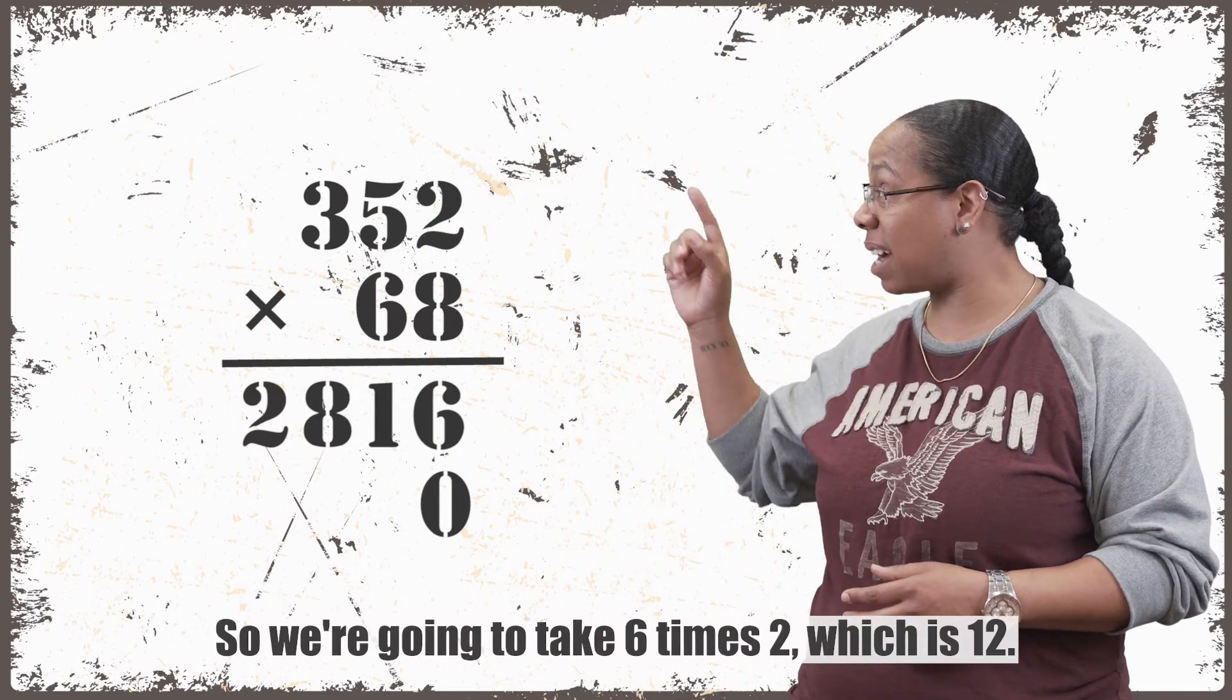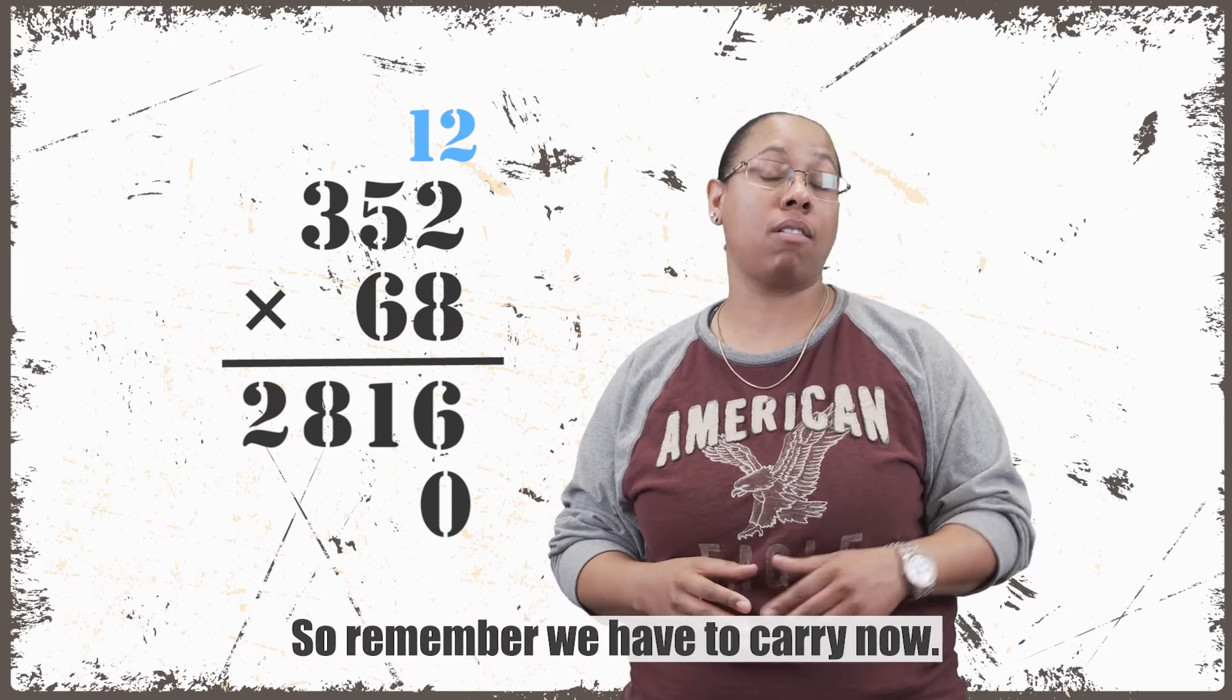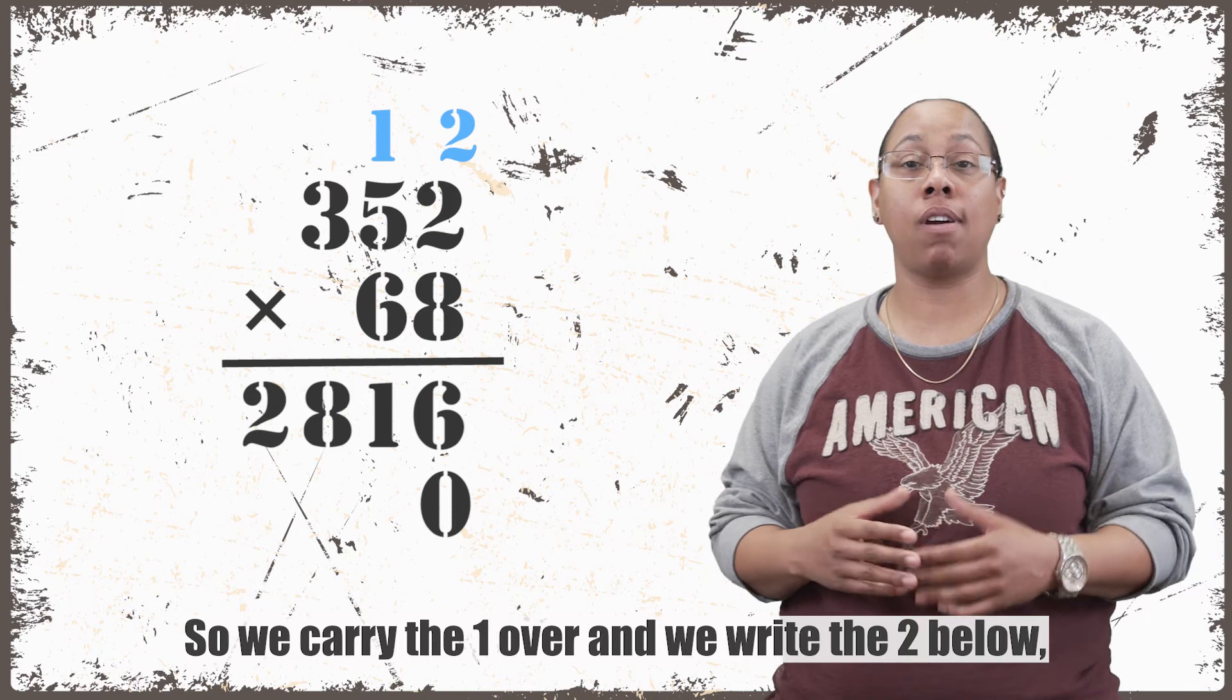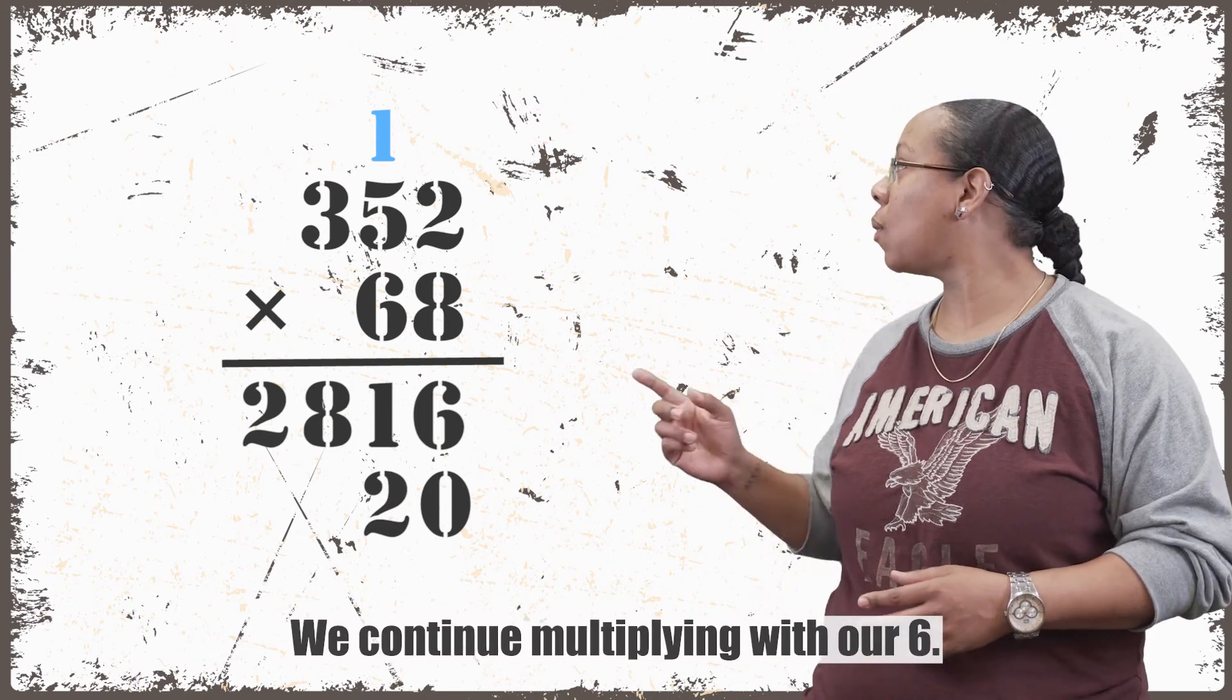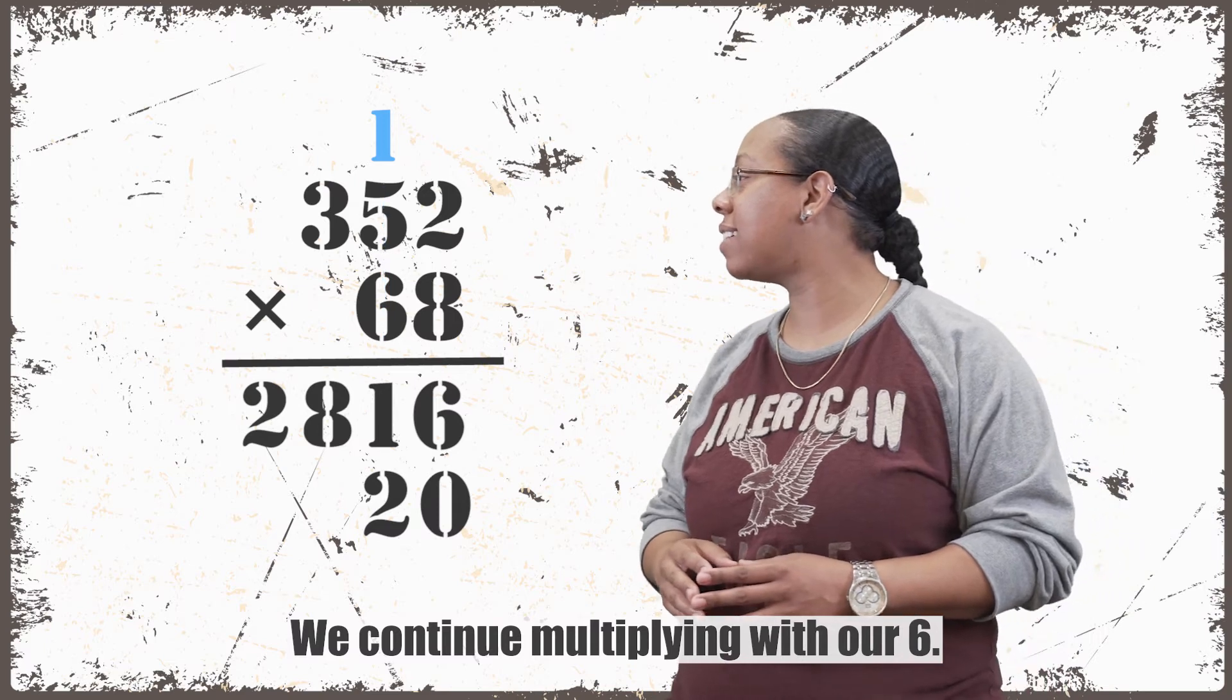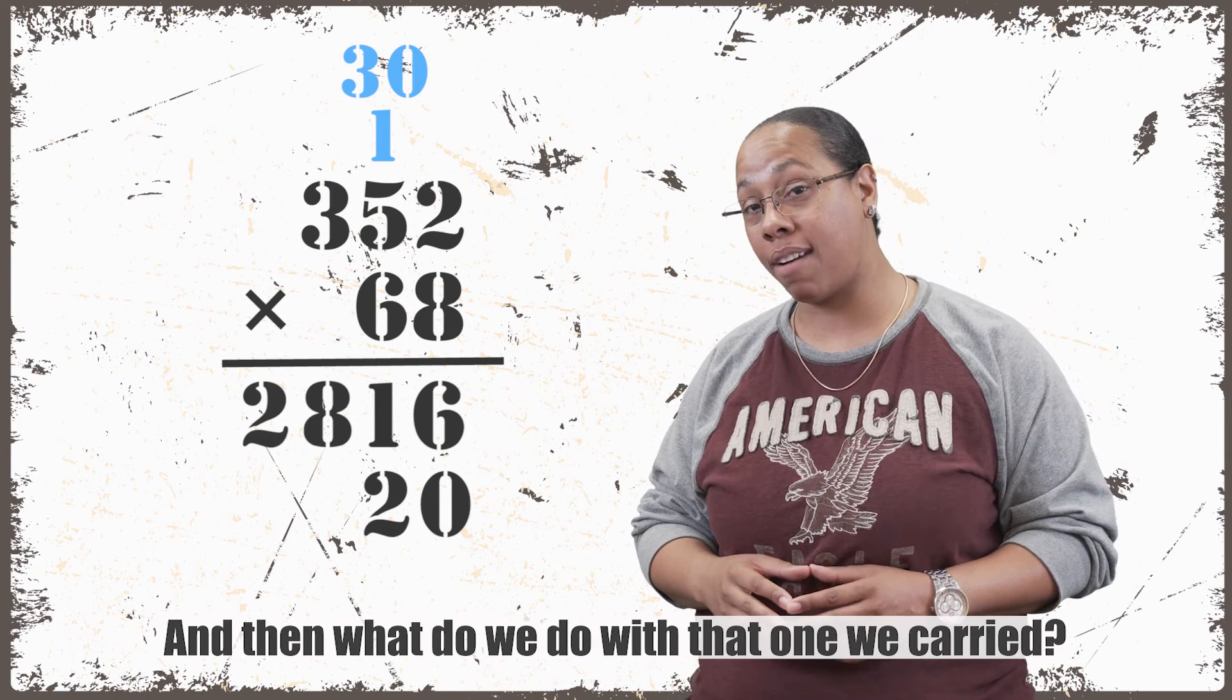So we're going to take 6 times 2, which is 12. So remember we have to carry now. So we carry the 1 over and write the 2 below, now next to the 0 in the tens place. We continue multiplying with our 6. Now we have 6 times 5, which is 30. And then what do we do with that 1 we carry?